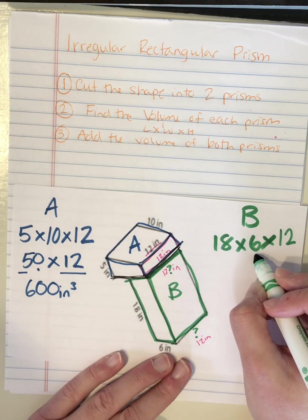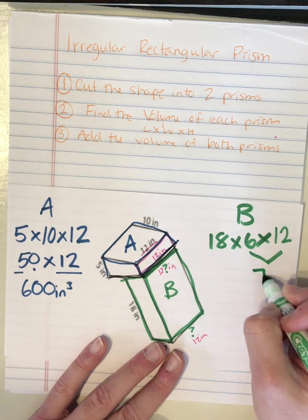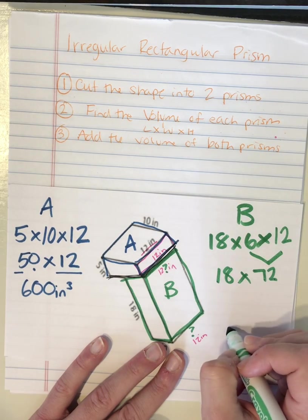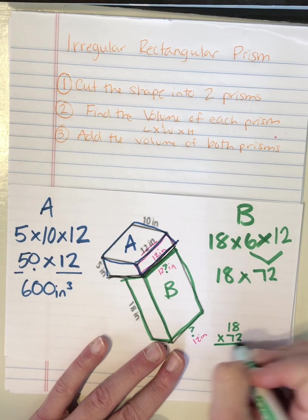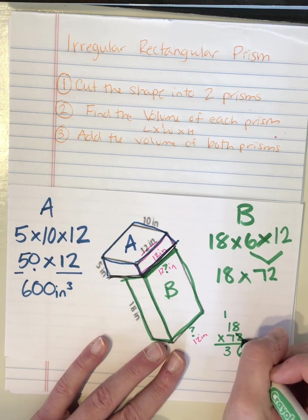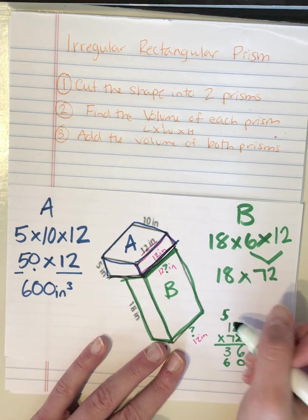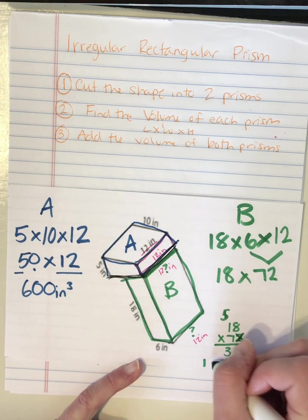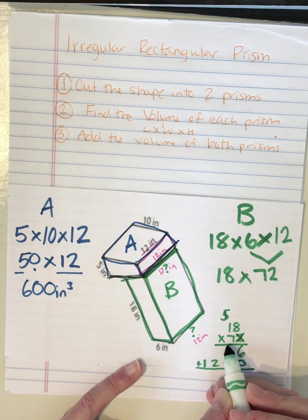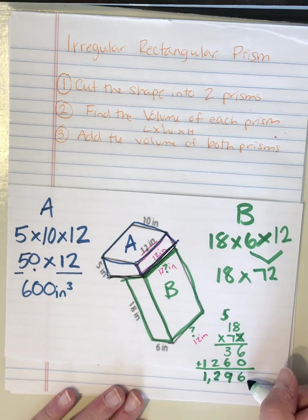So I'm going to have 18 times 6 times 12. So 6 times 12. I'm going to start over here because of my 6 facts or my 12 facts. I know 6 times 12 is 72. And now I'm going to solve 18 times 72. 8 times 2 is 16. 2 times 1 is 2 plus 1 is 3. 7 times 8 is 56. 7 times 1 is 7 plus 5 is 12. When I add that up, I get 1,296 cubic inches.